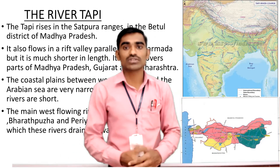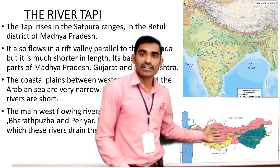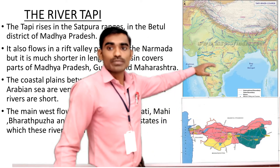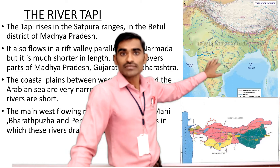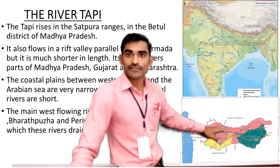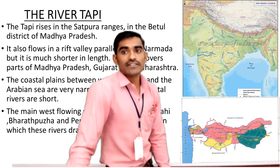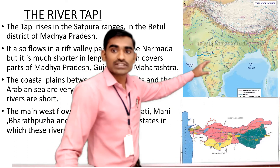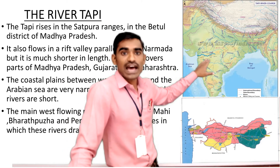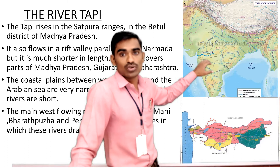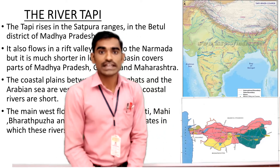Similar to the Narmada river, the Taapi river also flows through a rift valley, developed due to faulting of the surface land. It flows parallel to the Narmada river, but the length of the Taapi river is shorter than that of the Narmada river.